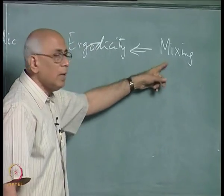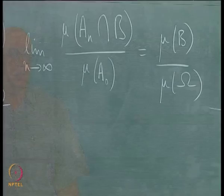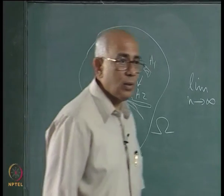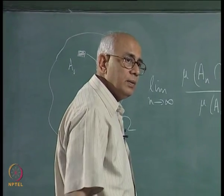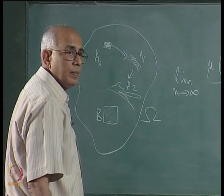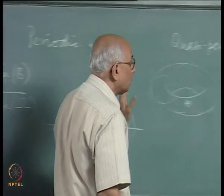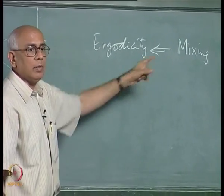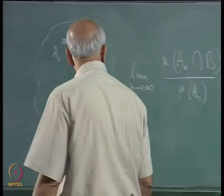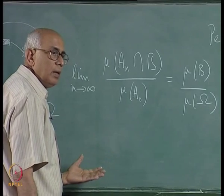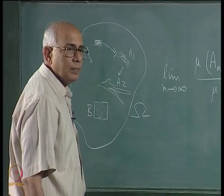A moment's thought shows that mixing implies ergodicity but ergodicity does not imply mixing, because ergodicity simply says this little patch keeps going around and visits everywhere but does not have to get distorted at all. Mixing implies ergodicity definitely, because there are parts of this little piece which you find everywhere given enough time. So mixing is the next in complexity beyond ergodicity. We are going beyond integrable systems and looking at things much more generally — such systems would certainly have properties like ergodicity and sometimes even mixing.